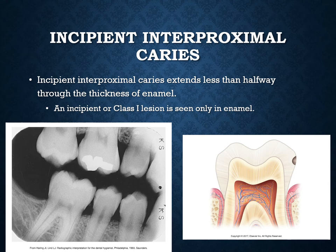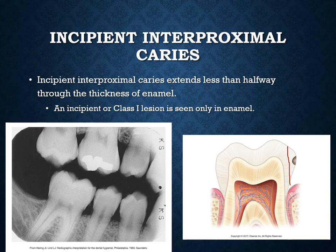The first classification is incipient caries: if the cavity extends only halfway or less than halfway through the enamel, it is an incipient or class one caries. This is very important: incipient caries can be reversed with fluoride. Once the cavity passes that halfway point, it can no longer be remineralized with fluoride and must be filled. When we identify incipient caries, we should talk to patients about the importance of remineralization.